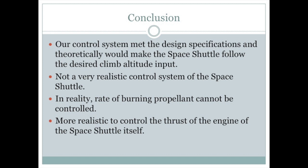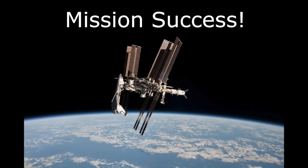So in conclusion, our control system does meet our design specs and theoretically, it would make the space shuttle follow the desired climb altitude input. However, this is not a very realistic control system of the space shuttle, just because we can't control the rate of burning propellant. Once the propellant burns, it burns until it runs out. It would be more realistic to control the thrust of the engine of the space shuttle itself, which can be modeled after when the solid rocket boosters fall off. That concludes our presentation. Thank you for listening and mission success!